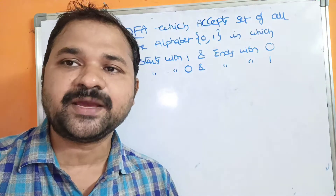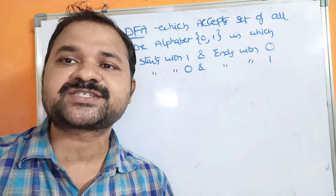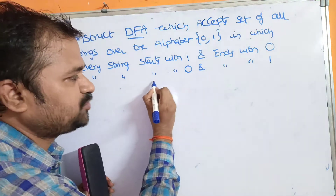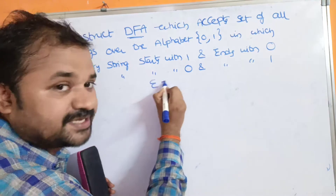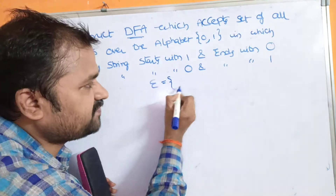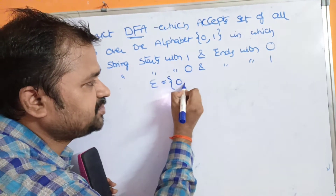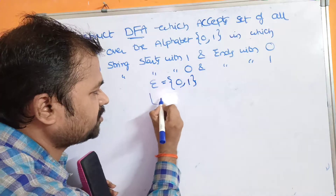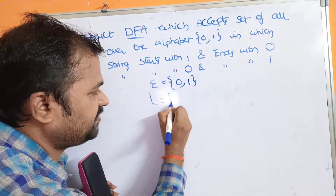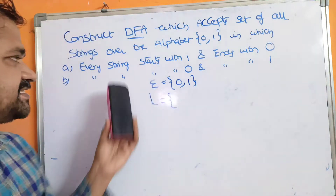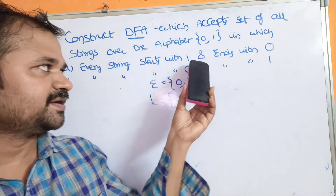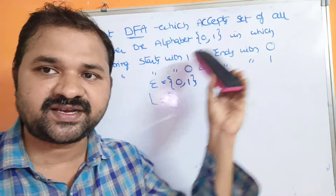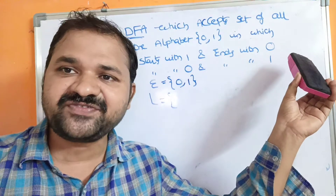The alphabet mainly contains two symbols. Sigma is equal to {0, 1}. Let us solve the first problem first. The first problem is: every string starts with 1 and ends with 0.